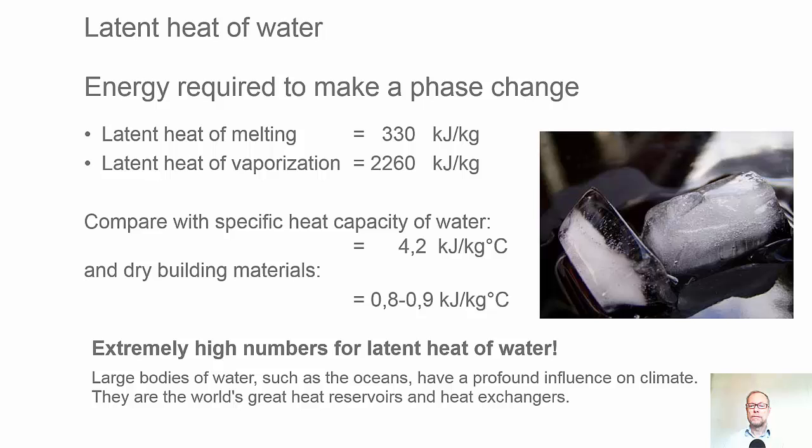We can compare it with the specific heat capacity of water, which is 4.2 kJ per kilogram Celsius, which is quite a low amount. And then we have a regular specific heat capacity for ordinary building materials, that's around 0.8 to 0.9 kJ per kilogram Celsius. So in general, we have quite high numbers for water: high heat capacity and high latent heat.